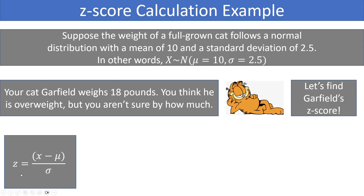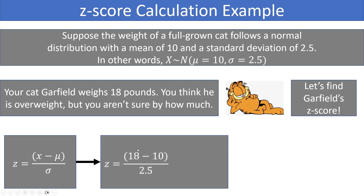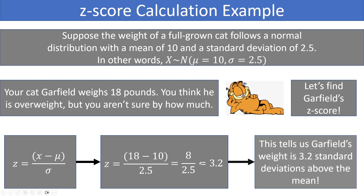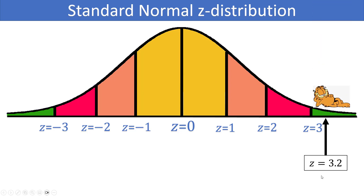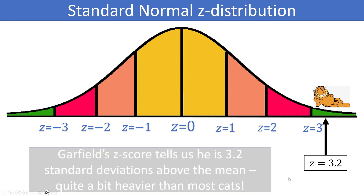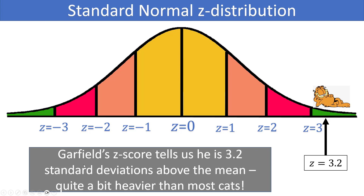To find the Z score, we plug into the formula: take X, the raw score, subtract the mean, then divide by the standard deviation. The observed value is 18 pounds. We subtract the mean of 10 pounds and divide by the standard deviation of 2.5. The numerator is 8 and the denominator is 2.5, so Z = 8 / 2.5 = 3.2. This tells us that Garfield's weight is 3.2 standard deviations above the mean, so he's on the very far right-hand side of the distribution.